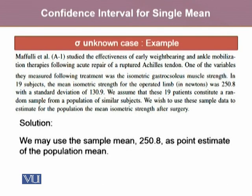Let's take an example where a researcher studied the effectiveness of early weight bearing and ankle mobilization therapies following acute repair of a ruptured Achilles tendon. One of the variables measured following treatment was isometric gastrocnemius muscle strength. In 19 subjects, the mean isometric strength for the operating limb in Newtons was 250.8, with a standard deviation of 130.9. We assume 19 patients constitute a random sample from a population of similar subjects, and we use the sample mean 250.8 as a point estimate of the population mean.